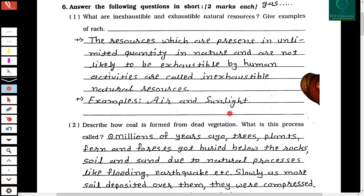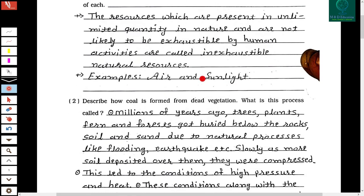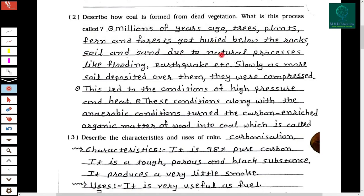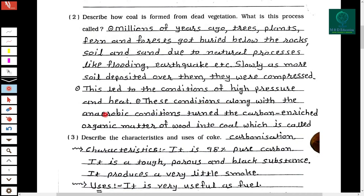Second question: Describe how coal is formed from dead vegetation. What is this process called? Millions of years ago, trees, plants, fauna, and forests got buried below rocks, soil, and sand due to natural processes like flooding, earthquakes, etc. Slowly, as more soil deposited over them, they were compressed, leading to conditions of high pressure and heat. These conditions, along with anaerobic conditions, turned the carbon-rich organic matter of wood into coal. This process is called carbonization.